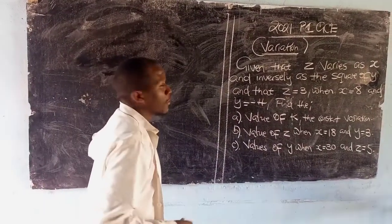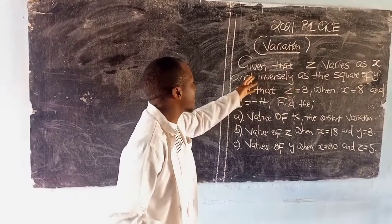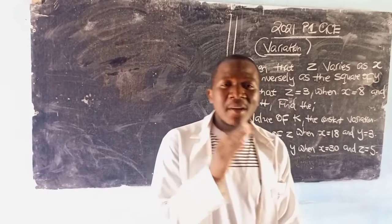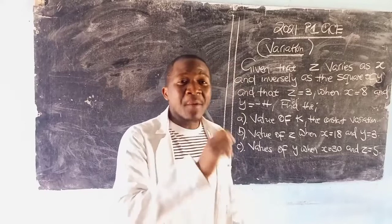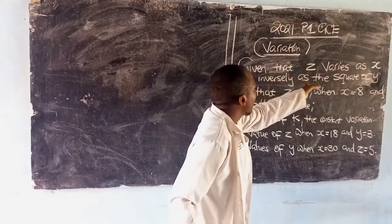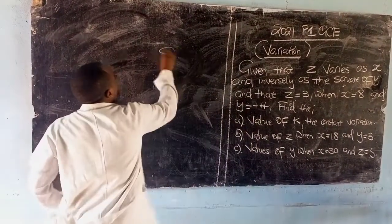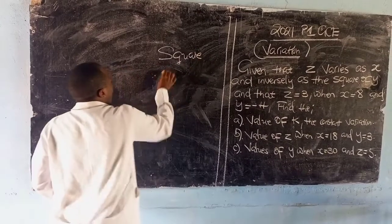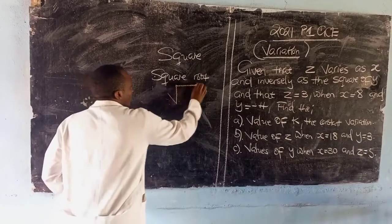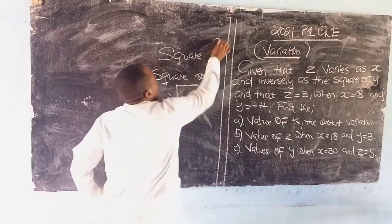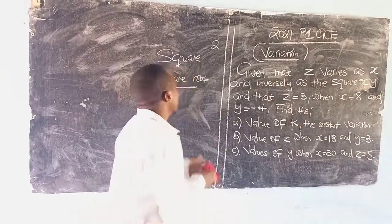So here the question is saying given that z varies as x. When they say z varies as x, it is as good as saying z varies directly as x and inversely as the square of y. We should understand when they say square of y, when they say square root we are talking about this symbol. When they say square we are talking about a power 2 or a letter raised to the power 2.